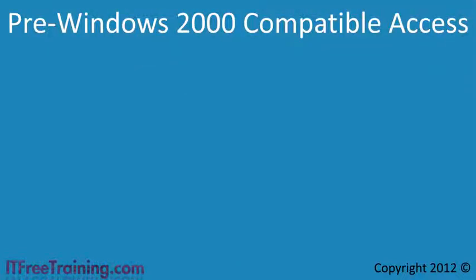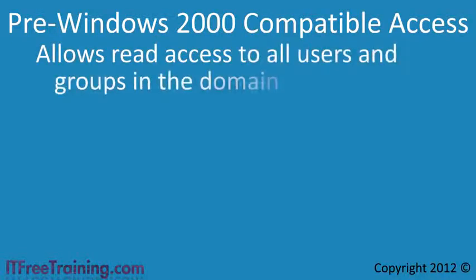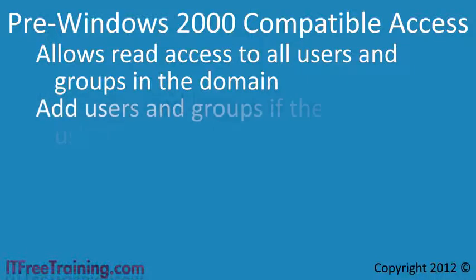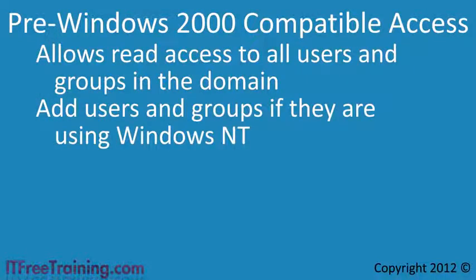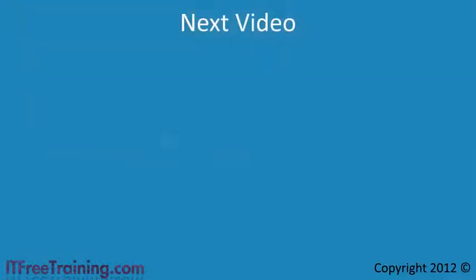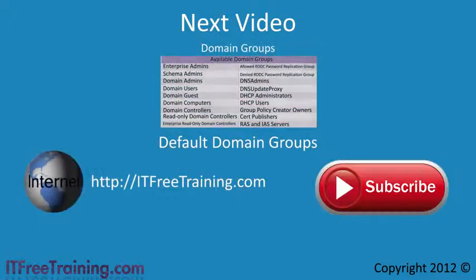The last group is Pre-Windows 2000 Compatibility Access. This group allows read access to all users and groups in the domain and should only be used if you have Windows NT computers in your domain. That's it for the built-in groups for a domain controller and the local groups on Windows Server 2008 R2. In the next video I will look at the domain groups that are created in Active Directory — these groups provide the backbone for access in your domain and provide access at the domain level. Thanks for watching another free video from ITFreeTraining.